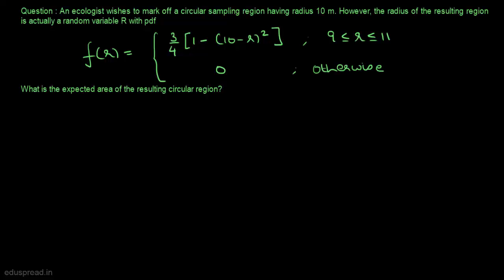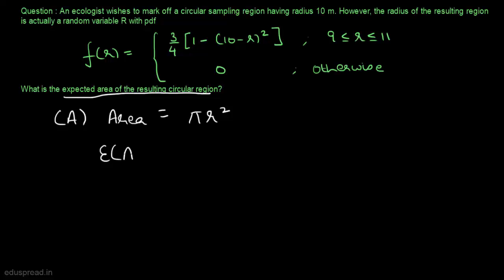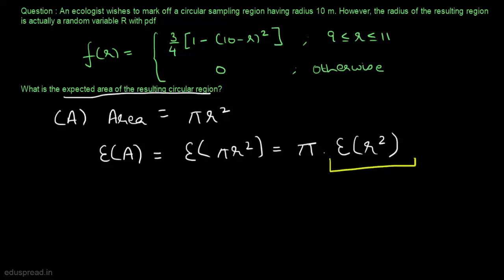We have to calculate the expected area of the resulting circular region. We know that the area of any circular region is equal to π·r². Let's denote this area by A, so we have to calculate the expected value of A. This equals the expected value of π·r². Since π is a constant, we can take it outside and write it as π multiplied by the expected value of r². So to calculate the expected area, we need to calculate the expected value of r².